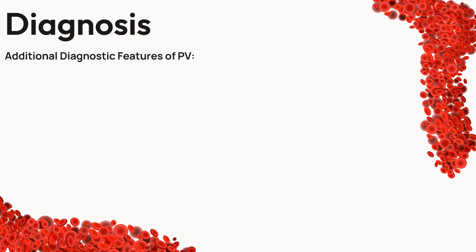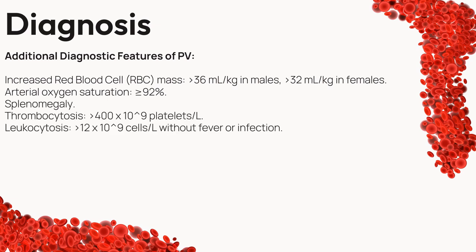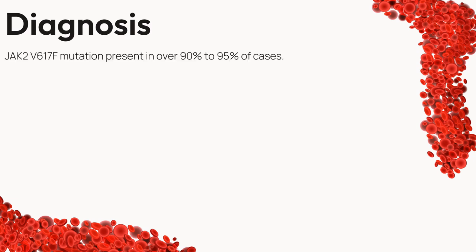Additional diagnostic factors include increased red blood cell mass, arterial oxygen saturation of at least 92%, splenomegaly, thrombocytosis, leukocytosis, and increased leukocyte alkaline phosphatase (LAP), serum vitamin B12, or unbound vitamin B12 binding capacity — all contributing to the diagnostic mosaic. The presence of the JAK2V617F mutation, detected in over 90% to 95% of cases, becomes a critical cornerstone in the diagnostic process.